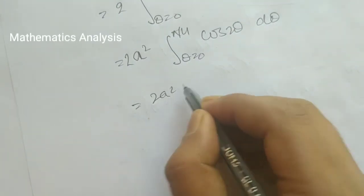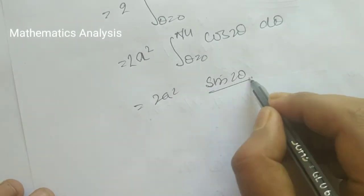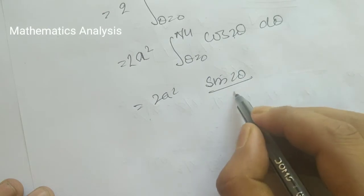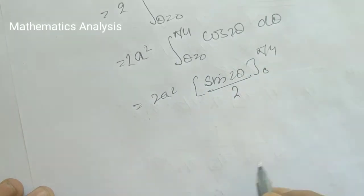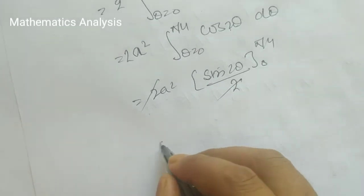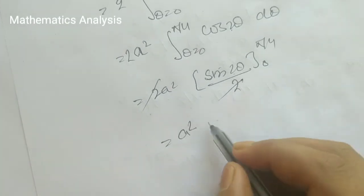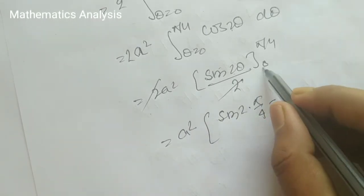The integral of cos 2θ, we substitute 2θ and divide by 2. The limit is 0 to π/4, giving us a squared sin 2θ over 2.